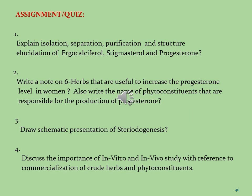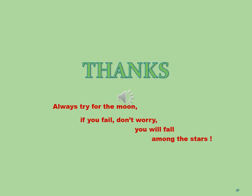Dear students, these are some important assignments and quizzes which you should submit within seven days after the delivery of the first lecture. Assignment 1: Explain the isolation, separation, purification, and structure elucidation of ergocalciferol, stigmasterol, and progesterone. Assignment 2: Write a note on six herbs useful for increasing the progesterone level in women, and name the phytoconstituents responsible for the production of progesterone. Assignment 3: Draw a schematic presentation of steroidogenesis. Assignment 4: Discuss the importance of in vitro and in vivo studies with reference to the commercialization of crude herbs and phytoconstituents. Thank you so much for your kind attention. In the next lecture, we will discuss the classifications, pharmaceutical applications, and isolation and purification of natural products of other classes.